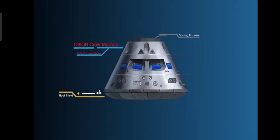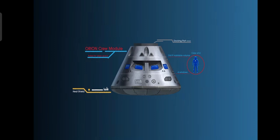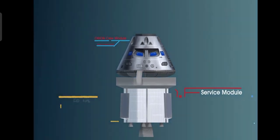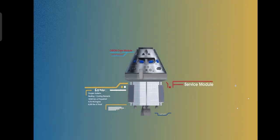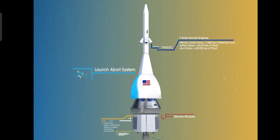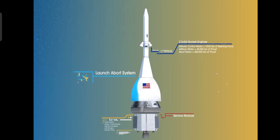The crew module, where up to four astronauts will live and work throughout the flight. The service module, with life support systems for the crew and its own engine and fuel reserves. And a launch abort system, with engines capable of pulling the crew module to safety during launch, should anything go wrong.